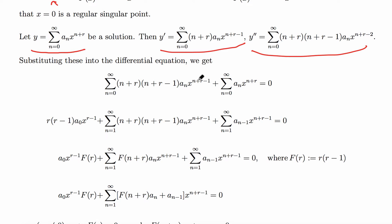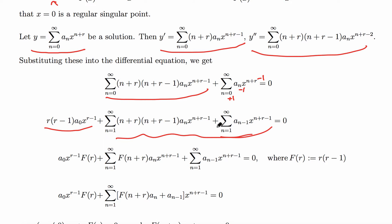We re-index to make the exponent n+r−1 uniform across both sums. We evaluate at n = 0, isolating the leading term, and combine the remaining sums starting from n = 1. The outside factor r(r−1) is the indicial polynomial, which we denote F(r), so F(r) = r(r−1).